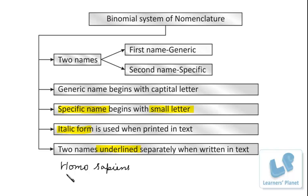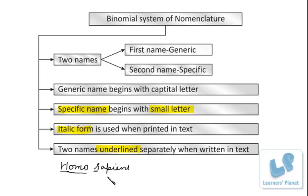You can see that the genus name Homo is written with a capital letter — always use capital letters to represent the genus name. For sapiens, the small letter is used. When written in text by hand, both names must be underlined separately: underline Homo separately and underline sapiens separately. If it is printed in text, you must use the italic form.